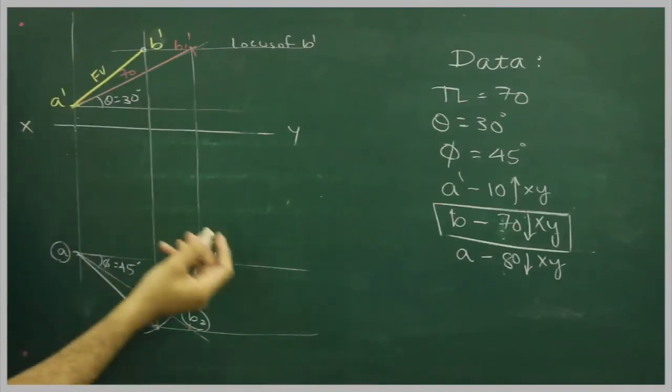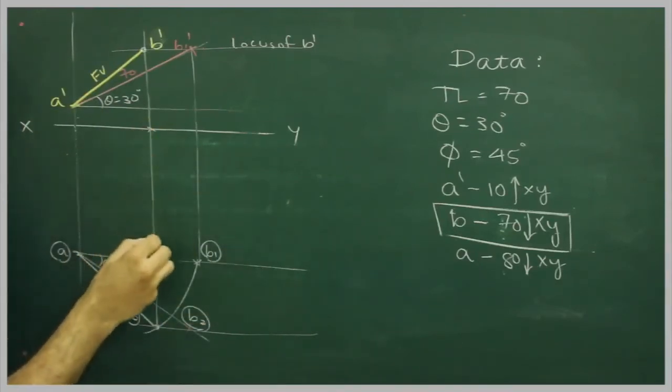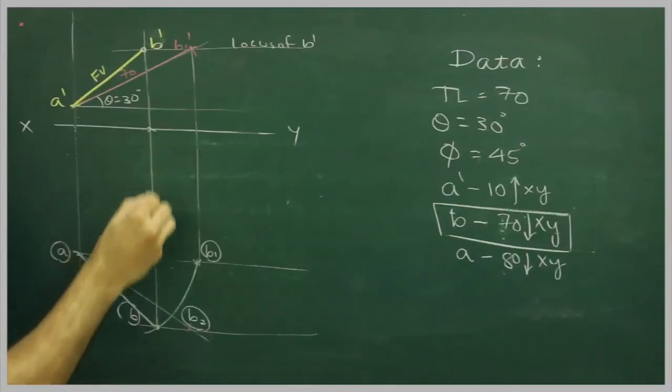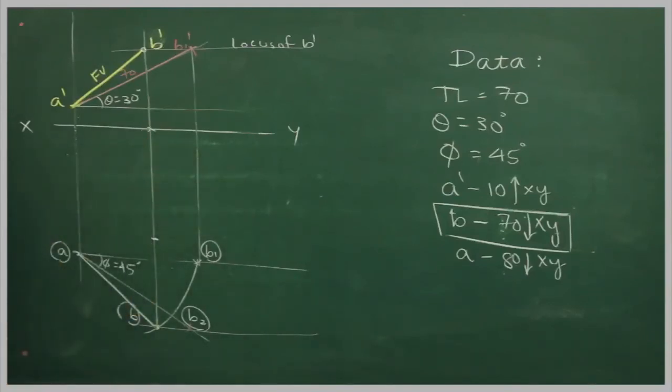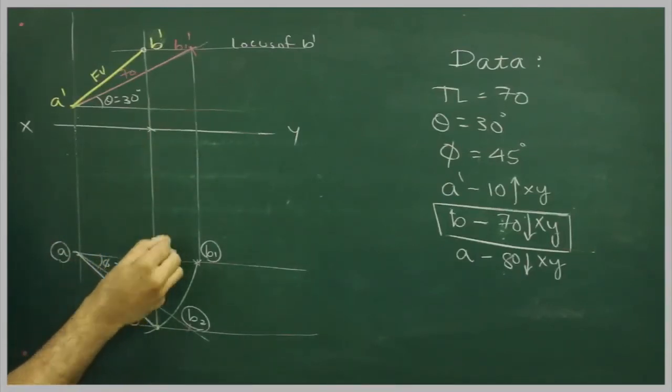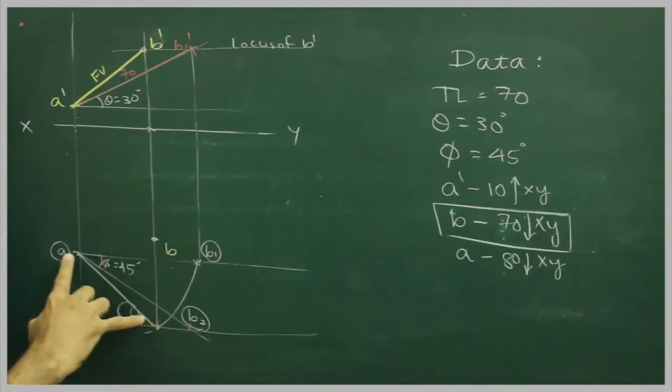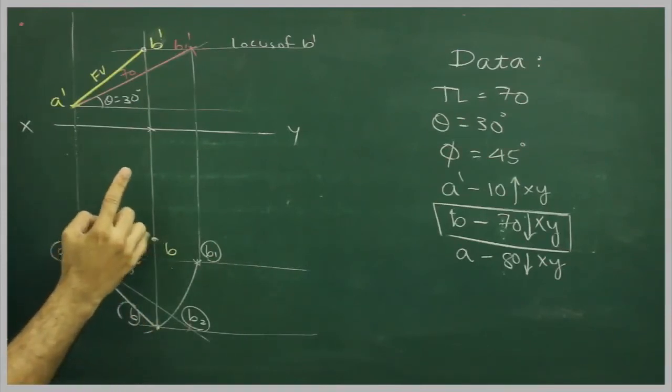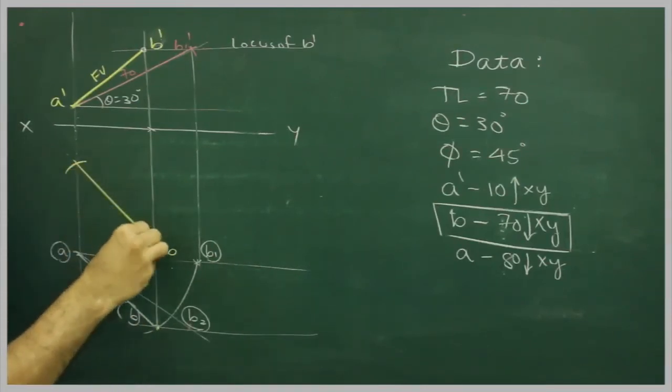Now we will use our original data, where b is 70 mm down. So from here we will go down by 70, we will mark this point as b. Take b to a and from here we will cut up this side, so we will get a.